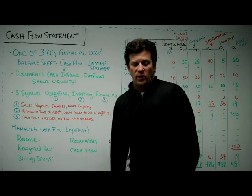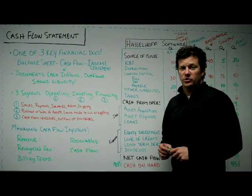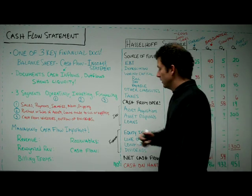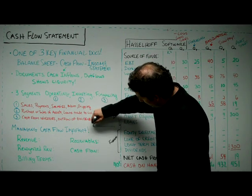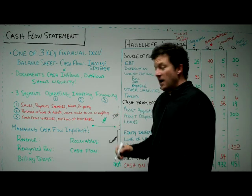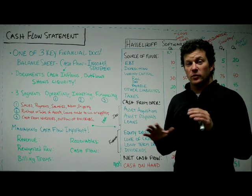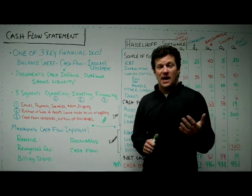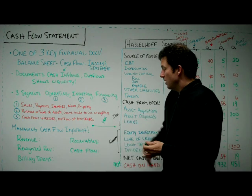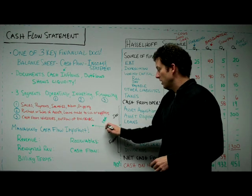Revenue is different than cash. I can sign a contract with a potential customer — let's say it's a service contract and they pay me monthly over 12 months. The total amount of that contract might be $100,000. I may call that revenue and put it on my income statement, and therefore it's going to show up in my net income. But the client doesn't necessarily pay me right away — they're going to pay me in little bits and pieces over the course of the contract.